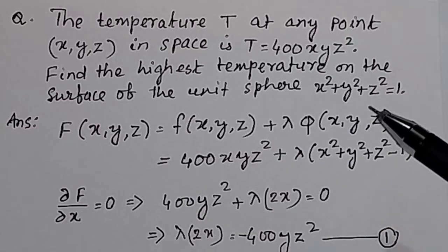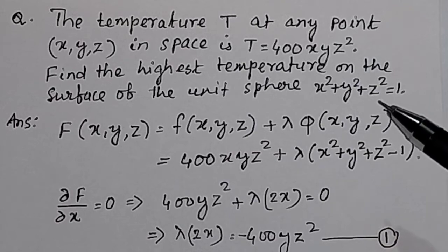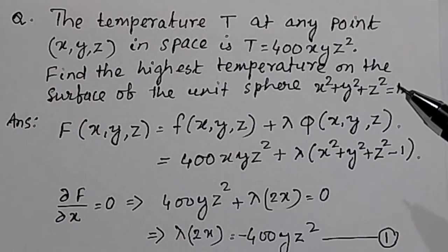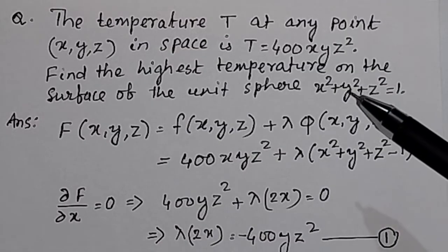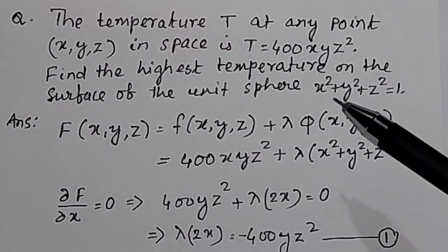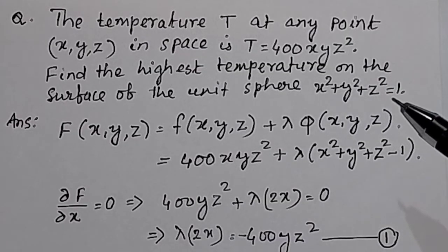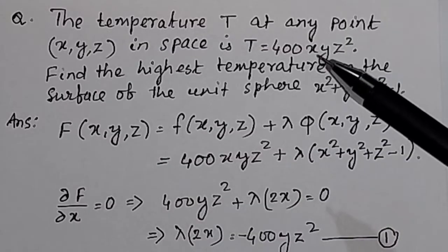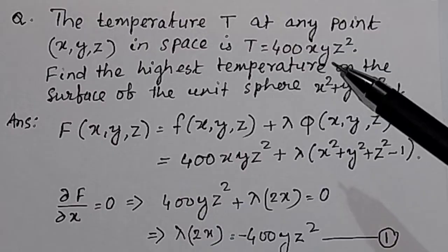We are given a unit sphere. The equation of a sphere is x² + y² + z², and since it is a unit sphere, r = 1, so the equation becomes x² + y² + z² = 1. This is the constraint or condition given, and the objective function is T = 400xyz².